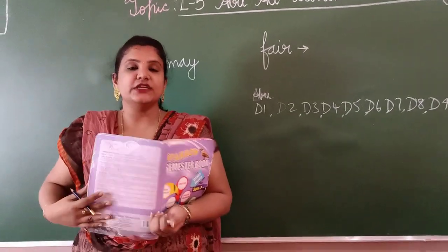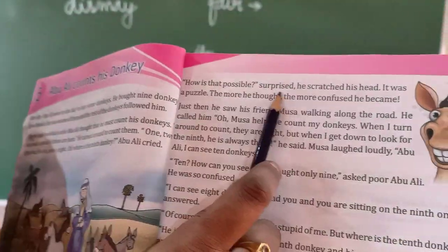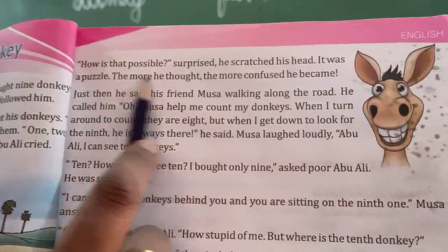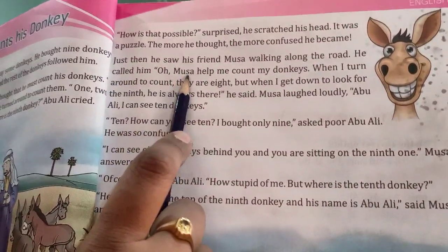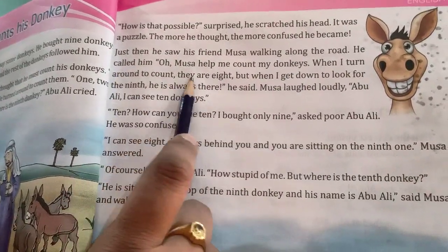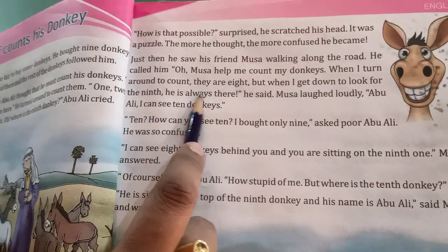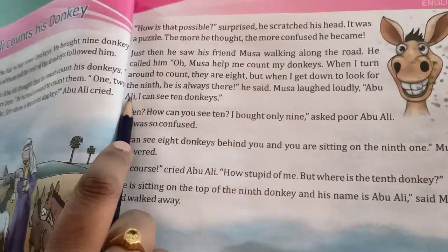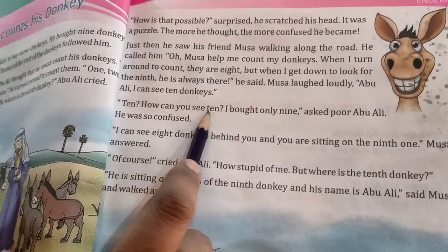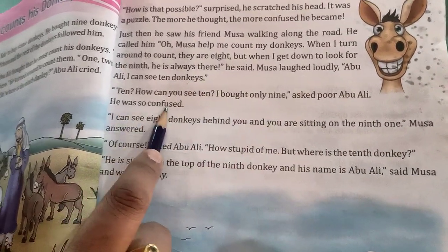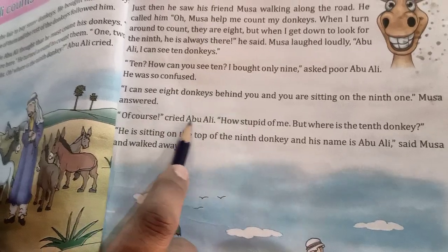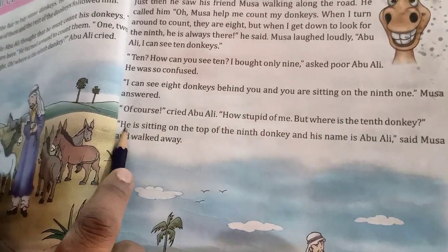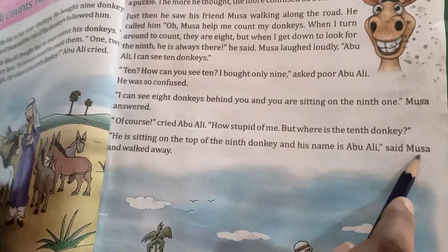Now again there are only eight donkeys and he is still worried. He scratched his head — it was a puzzle. The more he thought, the more confused he became. Just then, he saw his friend Musa walking along the road. He called him: Oh Musa, help me count my donkeys. When I turn around to count, they are eight, but when I get down to look for the ninth, he is always there. Musa said, Abu Ali, I can see ten donkeys. Ten? How can you see ten? I bought only nine, asked poor Abu Ali. Musa answered: I can see eight donkeys behind you and you are sitting on the ninth one. Of course! cried Abu Ali. How stupid of me, but where is the tenth donkey? He is sitting on top of the ninth donkey and his name is Abu Ali, said Musa and walked away.